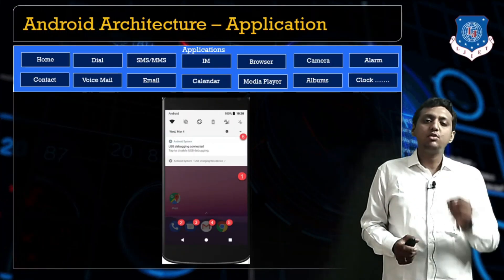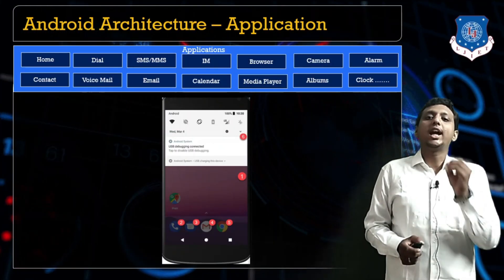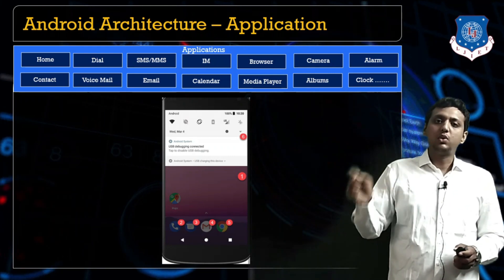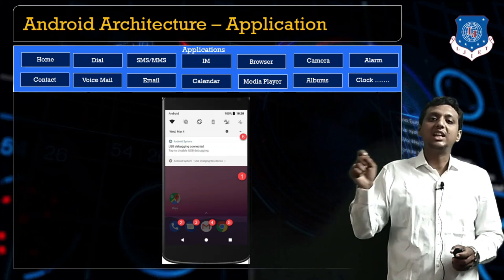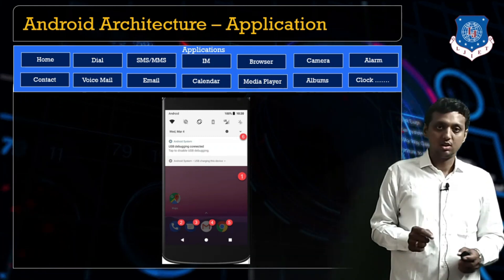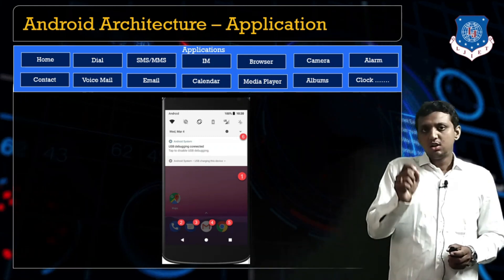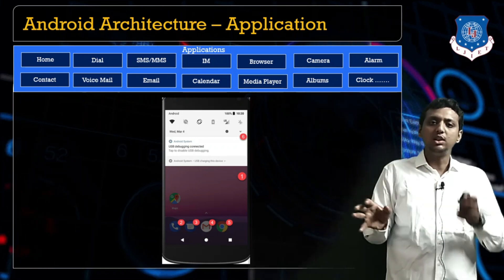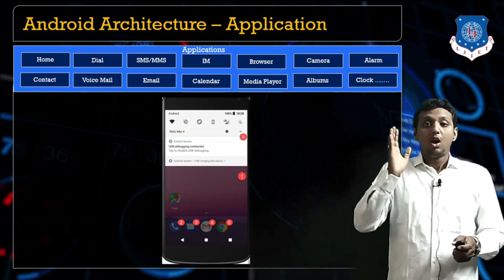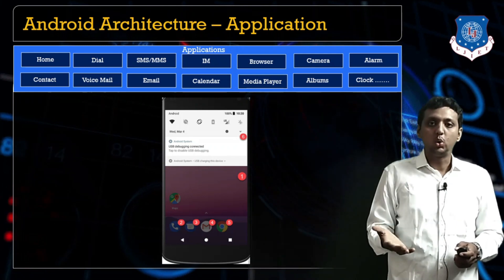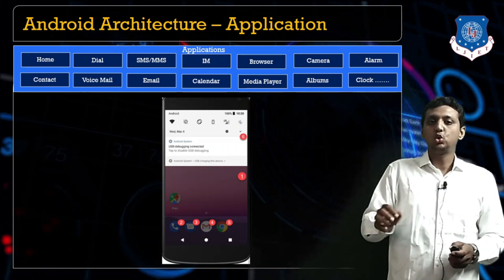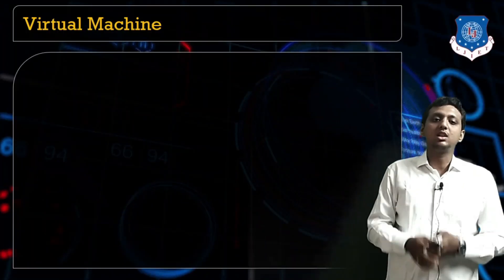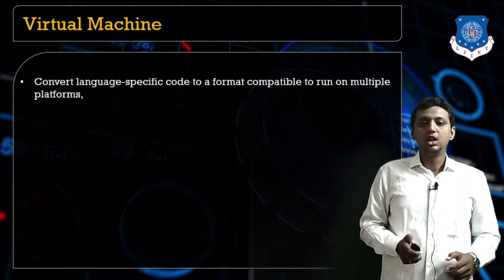I have shown you the Android runtime, which works like a DVM — the Dalvik Virtual Machine. Right now we have the ART, and before that we had the DVM. So what is the difference between both of them? How does the virtual machine execute the code? This is the next topic: virtual machines.